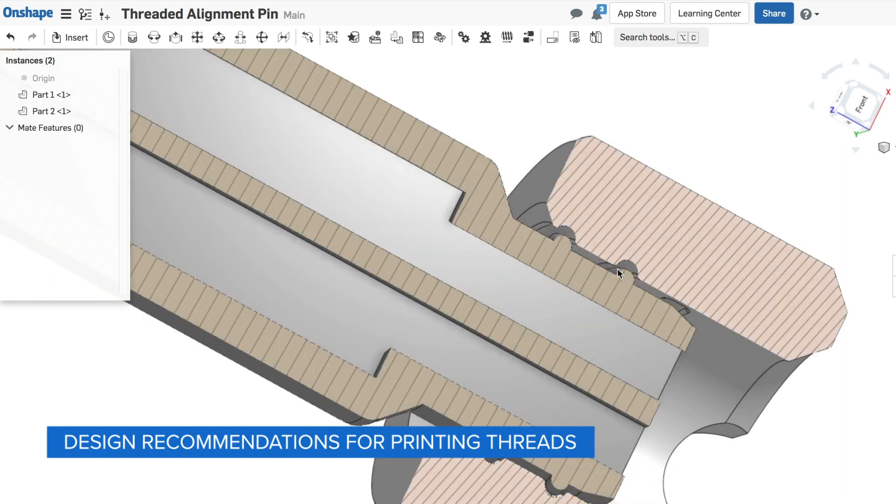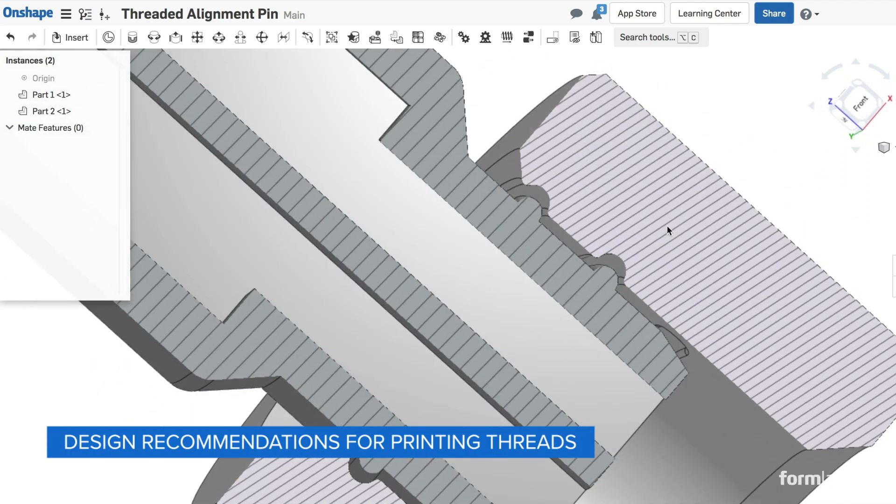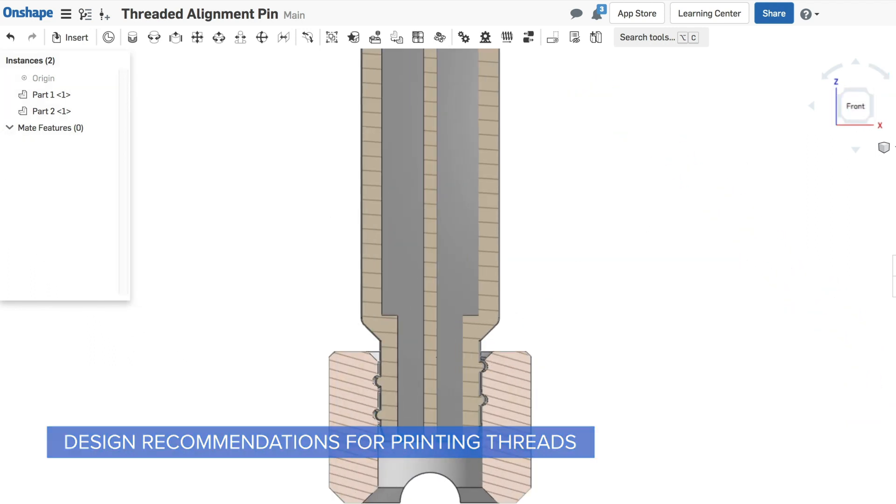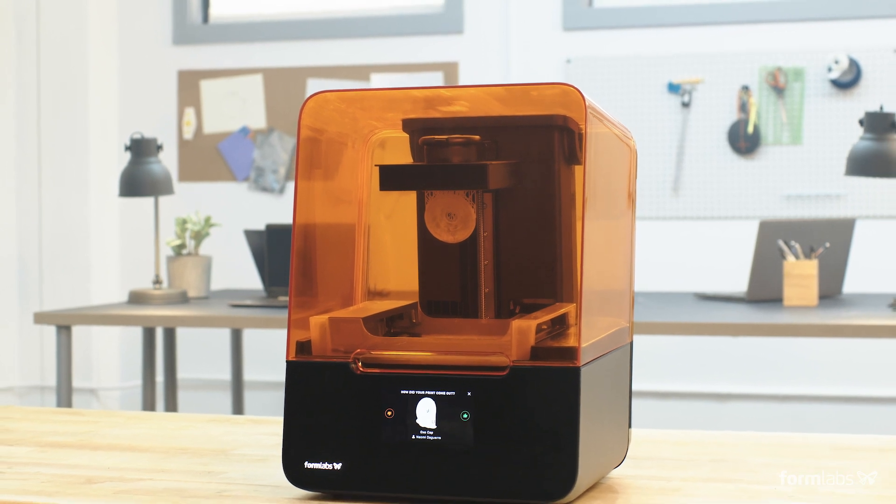Because screw thread tolerances need to be in a relatively narrow range to be effective, it's important to use a fabrication process that is precise and accurate. In this case, we are using the Form 3 desktop 3D printer.